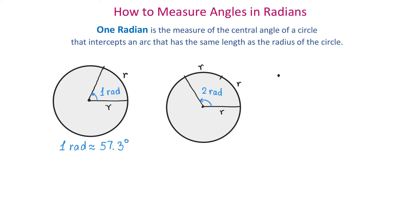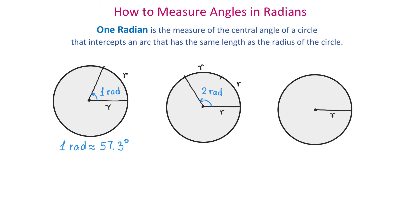Let's have one more circle. This circle also has the radius r. Along the circle, we will plot this distance r three times. Through this point, we will draw the terminal side. Then the measure of this angle will be three radians.